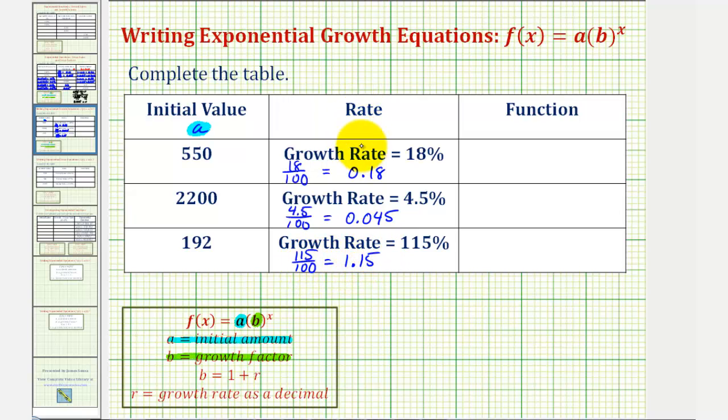Now that we have each growth rate as a decimal, this column now gives us r, where the growth rate r is expressed as a decimal. So now we have r here, here, and here.